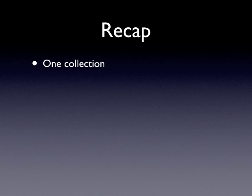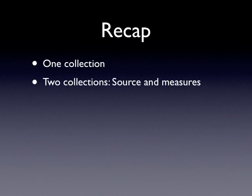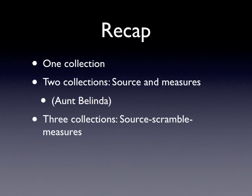First, the recap. We've been doing a lot of different types of simulations. We've done one-collection things, like when we were just rolling dice. We've done two-collection, where there's a source and then we collect measures. A prototype for that is the Aunt Belinda problem, where we flipped 20 coins and she got 16, and we tried to figure out whether she has special powers. We've done three collections, where we have a source collection, and then you scramble one of the attributes, and then you collect measures. A prototype for that is difference in income, where we're trying to see whether that could be due to chance.